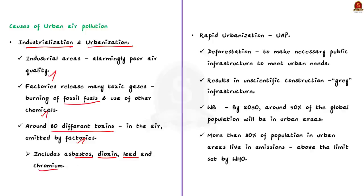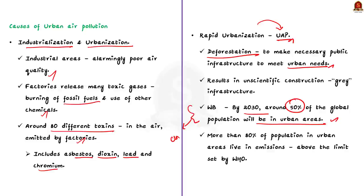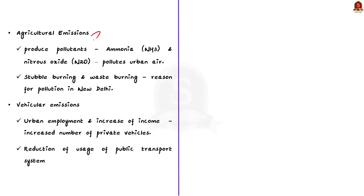Secondly, rapid urbanization leads to urban air pollution through deforestation for meeting urban needs. The World Bank estimates that by 2030, around 50% of the global population will reside in urban areas. This unsustainable rate of urbanization reduces green cover, leading to urban air pollution. The next cause is agricultural emission. Agricultural activities like stubble burning and waste burning are a major reason for pollution in cities like New Delhi, producing pollutants like ammonia and nitrous oxide.